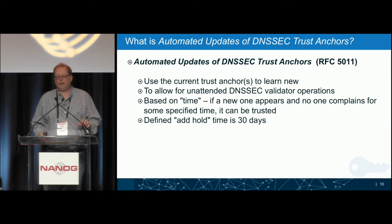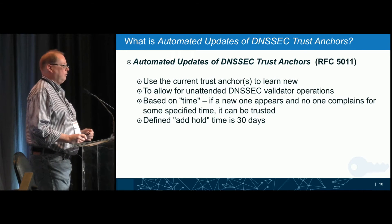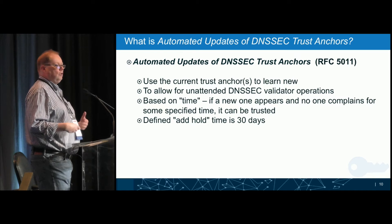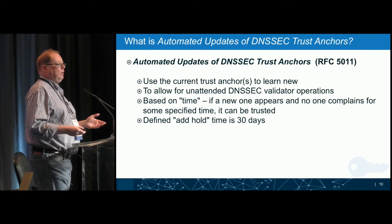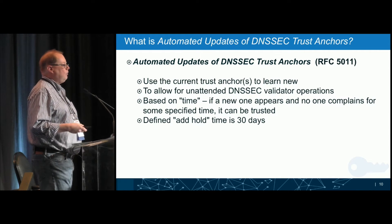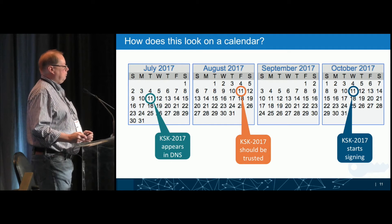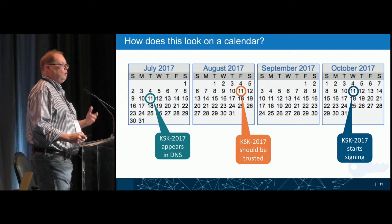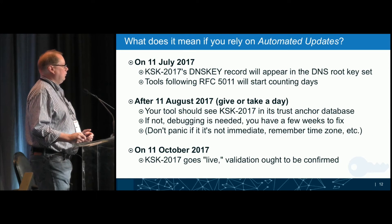Automated updates of DNSSEC trust anchors uses the current trust anchors to learn new ones. We put out new trust anchors, sign them with the old trust anchors, and after some time you can assume the new trust anchor is good. It allows unattended DNSSEC validator operations — you can just turn on automatic updates and it will continually learn the keys. If no one complains about the new key over time, it's valid. On the calendar: July 11th we start the process. By August 11th you should have the new key learned in your system. After that date, start verifying you have the key. October 11th the new key goes live — by that time it must be handled.